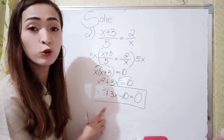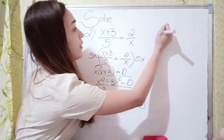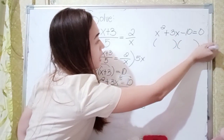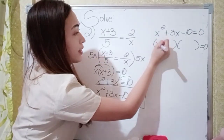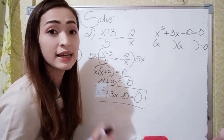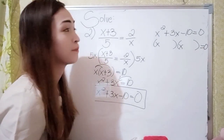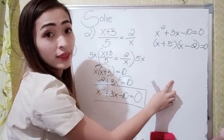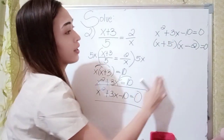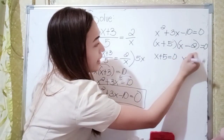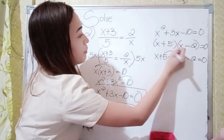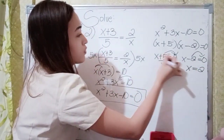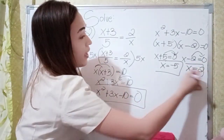Let's get the roots of x squared plus 3x minus 10 equal to 0 by factoring. The factors of x squared are x times x. Think of two numbers that multiply to negative 10 and add to positive 3 — that is positive 5 and negative 2. So: x plus 5 equal to 0 gives x equals negative 5, and x minus 2 equal to 0 gives x equals positive 2. Our solutions are x equals negative 5 and x equals 2.